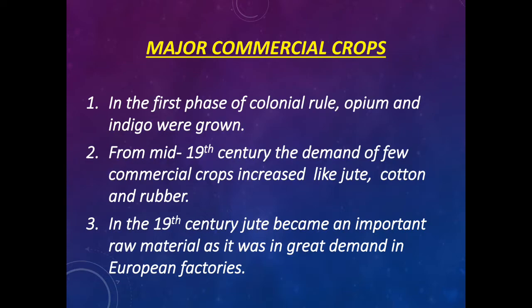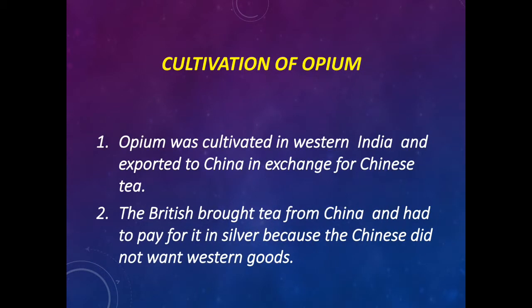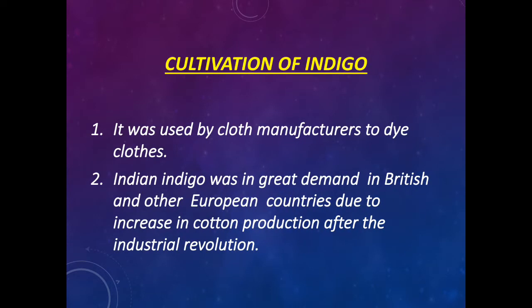Cultivation of Opium: Opium was cultivated in Western India and exported to China in exchange for Chinese tea. The British brought tea from China and had to pay for it in silver because the Chinese did not want Western goods. Cultivation of Indigo: Indigo was used by cloth manufacturers to dye clothes. Indian indigo was in great demand in Britain and other European countries due to the increase in cotton production after the Industrial Revolution.